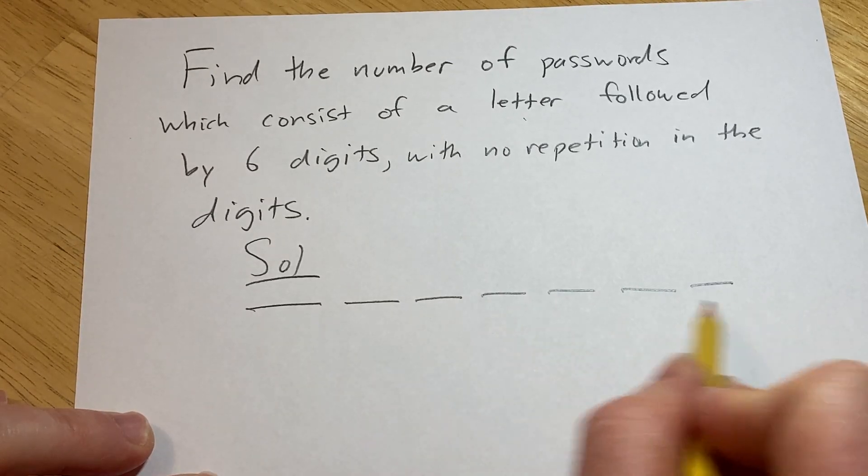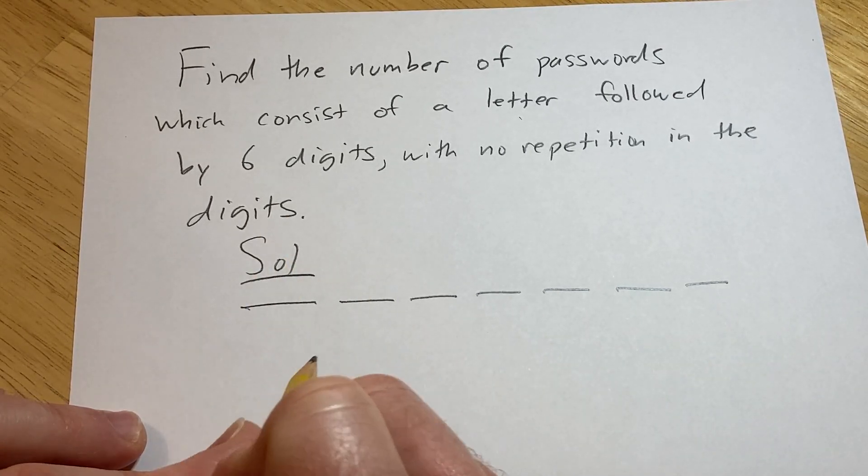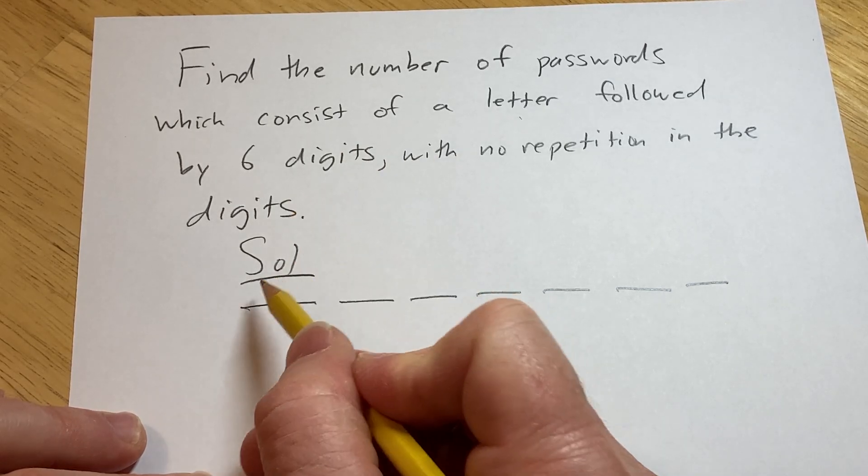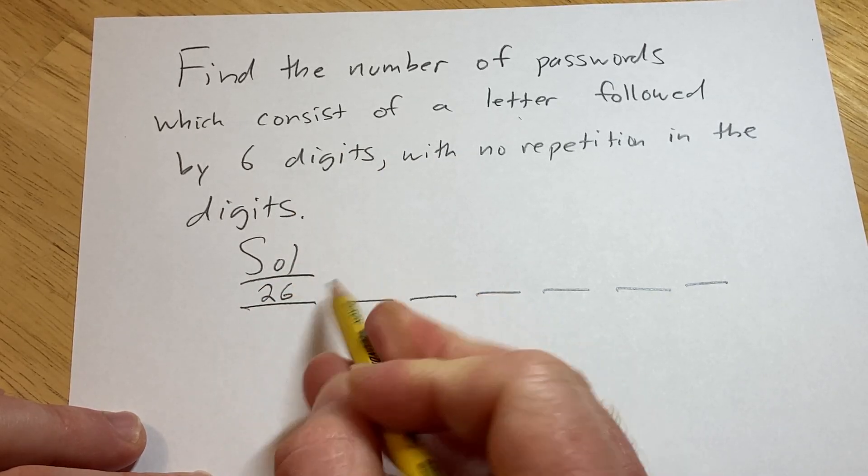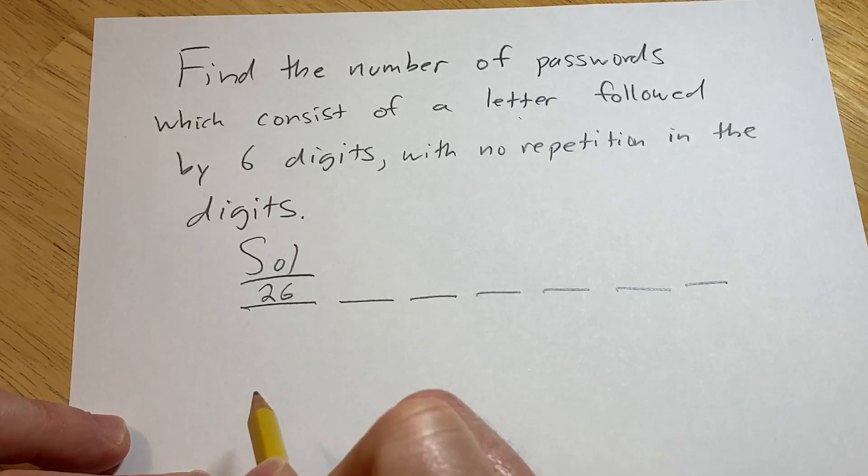So we need to figure out how many ways can we construct such a password. The first character is a letter and we know there are 26 letters in the English alphabet. So there are 26 choices for the first character.